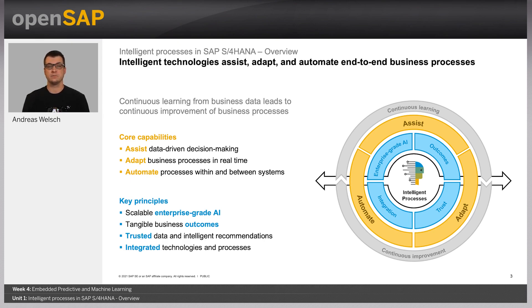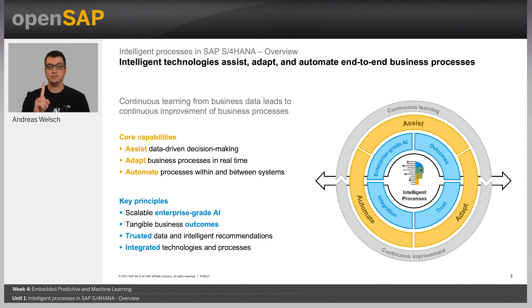What are intelligent processes? Intelligent processes help businesses learn from data and thereby improve their processes to become more efficient or make better decisions. We do this by focusing on three core capabilities. First, assisting business users' decision-making by helping them get the right information more quickly and in the right context — for example, through digital assistants or intelligent frameworks such as situation handling.